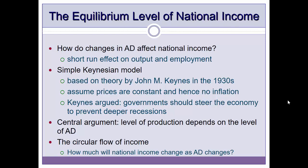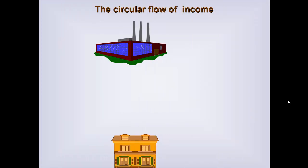This remains a very general theory, so the question is: by how much will national income change as aggregate demand changes? We will ultimately answer this question. In this video I will describe the simple model first, and in the following videos we will cover the Keynesian multiplier, which helps us assess the extent to which national income changes as aggregate demand changes.